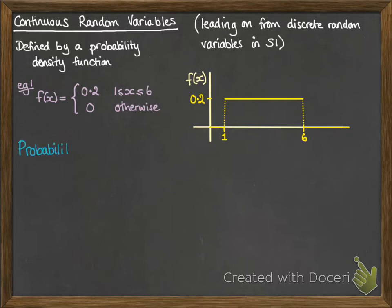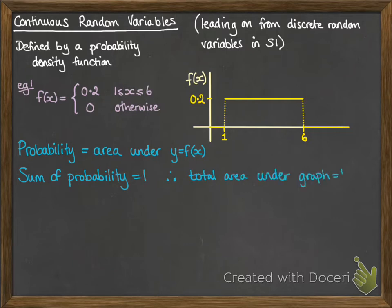Now the probability of x being within a range is defined as the area under that curve for that range. If we are looking at the whole of the graph, since we know that the sum of probabilities have to add up to 1, that gives us this fact that the total area under the graph must also add up to 1.